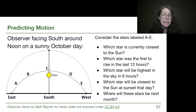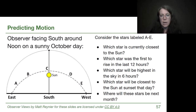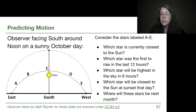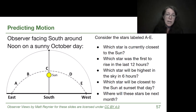Which star will be highest in the sky in six hours? The whole set of stars rotates, and star A is going to be the one that stays highest as E and D go below the horizon. Star C, which looks near the meridian, will be right on the cusp of setting in six hours. Which star will be closest to the sun at sunset? Because all stars and the sun move through the sky due to Earth's rotation, star C stays with the sun over the course of that day — it will still be next to the sun around sunset.